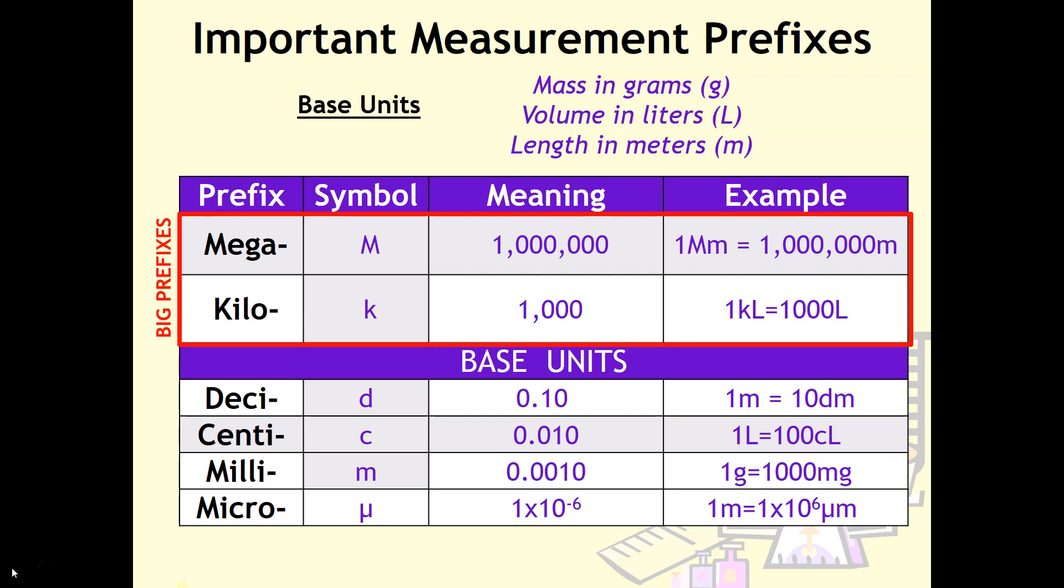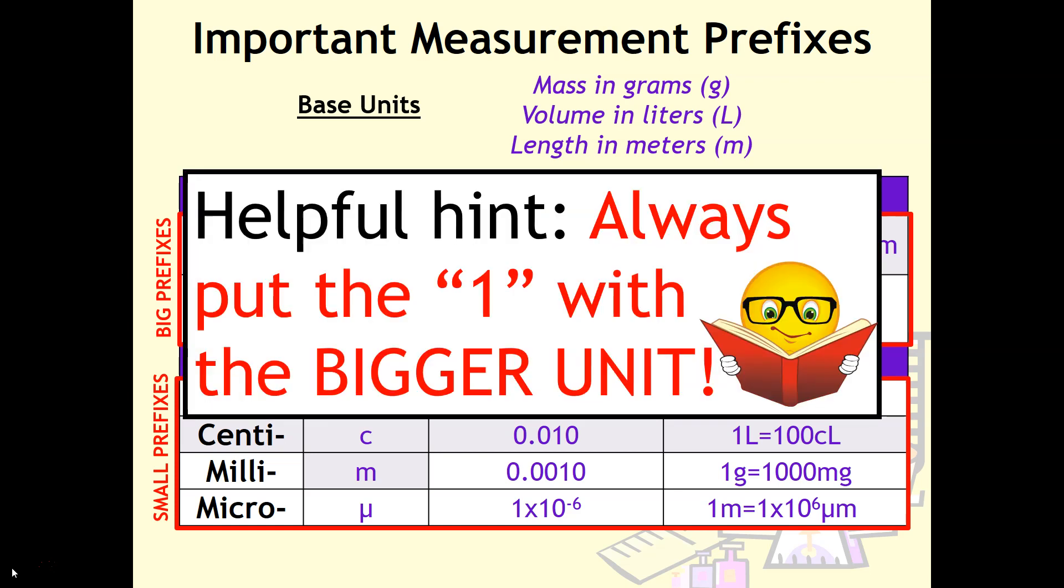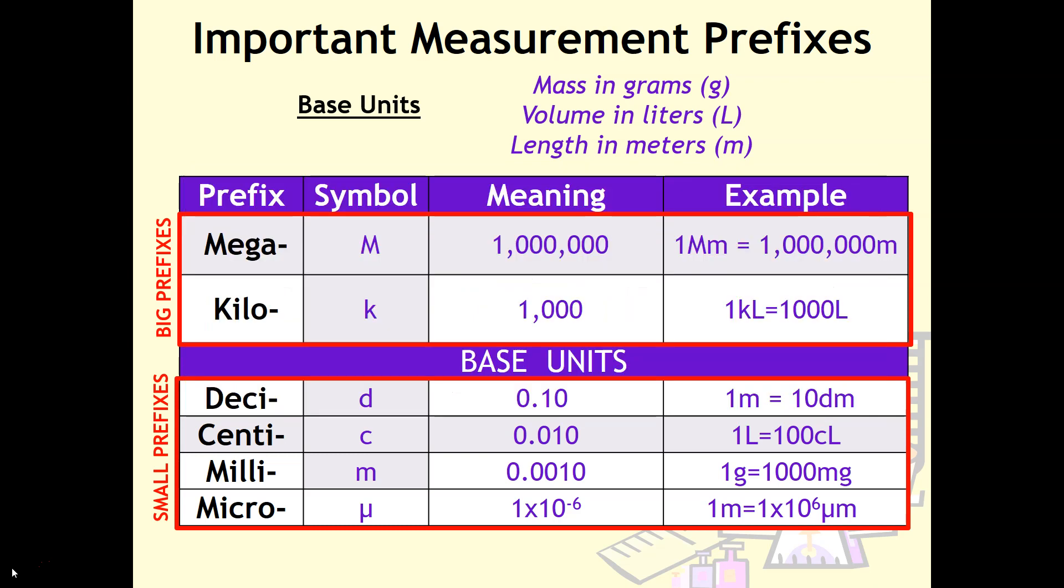Note that on the top you've got the big prefixes, and on the bottom you've got the small prefixes. If you're a visual learner like me, this helps understand the relationships between these units. Take a mental picture of this. The other thing that helps is always put the one with the bigger unit. For example, with megameter, mega is a large prefix bigger than the base unit, so I put the one with megameter. That means it takes a lot more meters to equal one megameter. Conversely, with smaller prefixes, it takes a lot more decimeters to equal one meter.